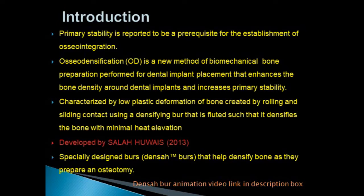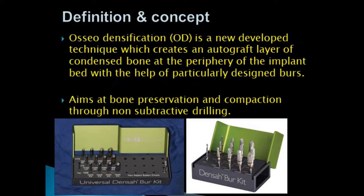Osteodensification is defined as a newly developed technique which creates an autografted layer of condensed bone at the periphery of the implant bed with the help of particularly designed burrs. The main aim of OD is bone preservation and compaction through non-subtractive drilling. Standard drills excavate bone during implant osteotomy, and osteotomes tend to induce fractures of the trabeculae, leading to more remodeling time and delayed secondary stability. In osteodensification, the specialized Densa burrs allow for bone preservation and condensation through compaction autografting, which increases bone density, improves mechanical stability, and shortens the healing period.